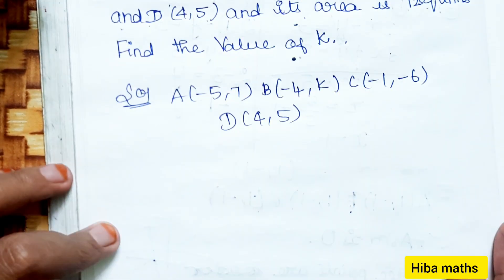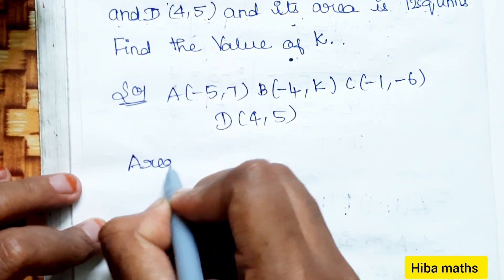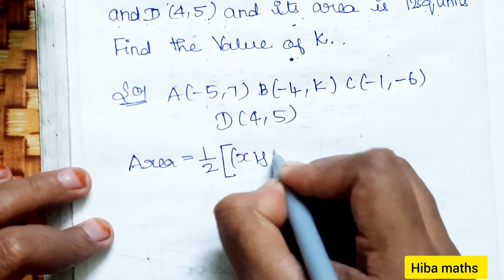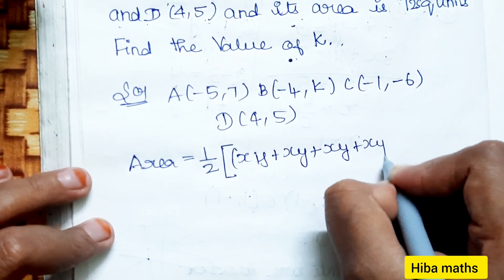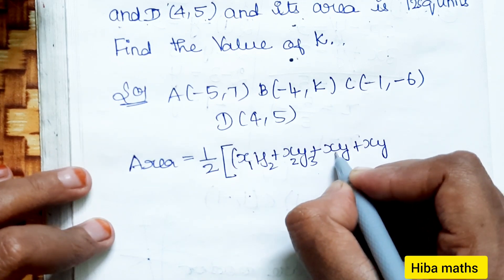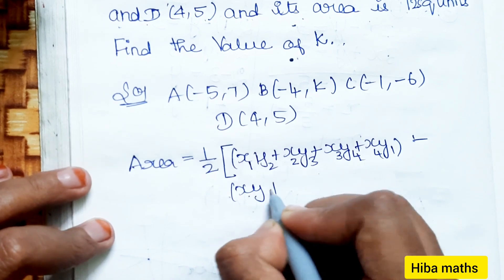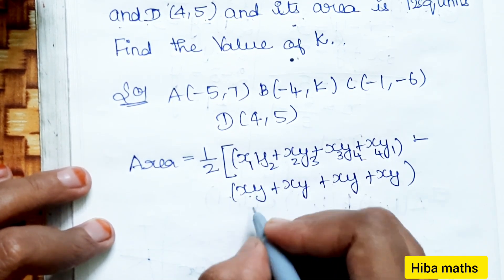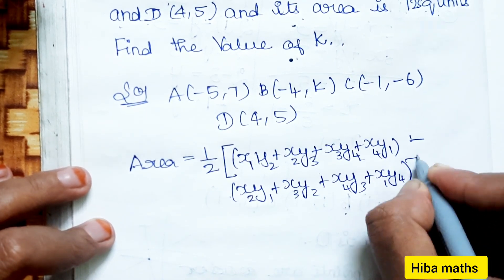The area of quadrilateral formula is equal to 1/2 [x₁y₂ + x₂y₃ + x₃y₄ + x₄y₁ - x₂y₁ - x₃y₂ - x₄y₃ - x₁y₄].